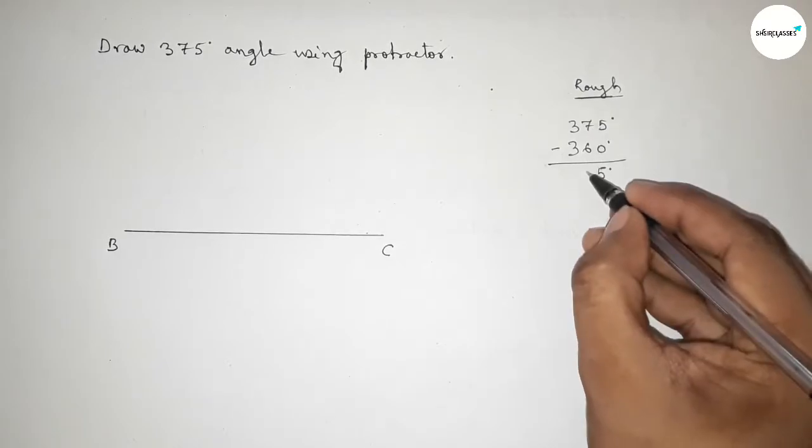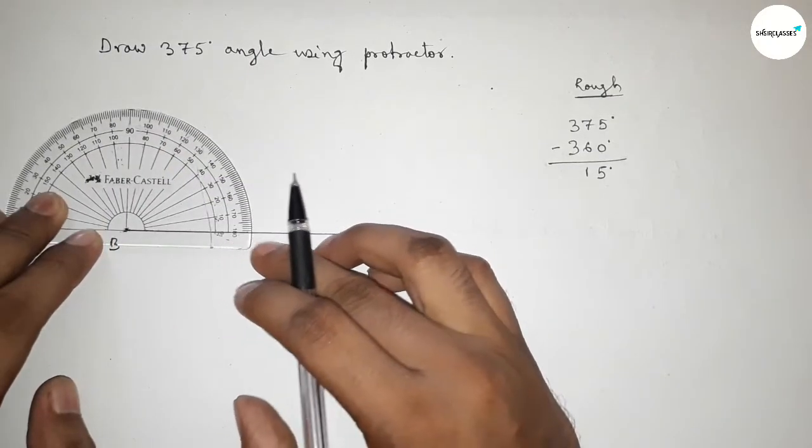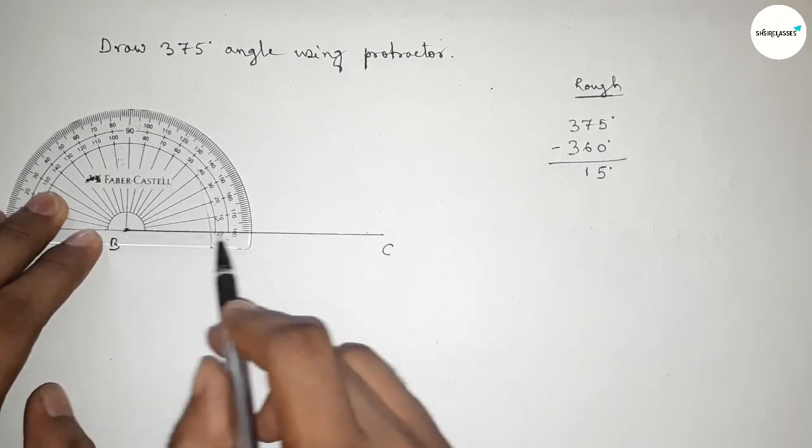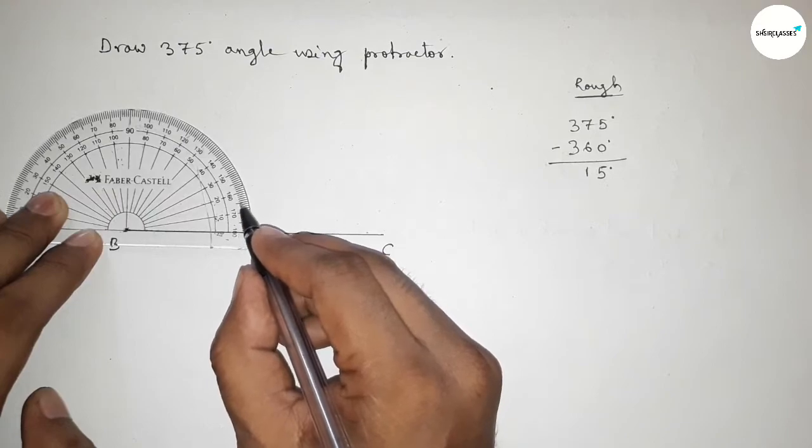On point B by using a protractor. By this way, this is starting 0, and this is 10, and this is 15. So this line denotes a 15-degree angle. First marking here, so this is 15 degrees.